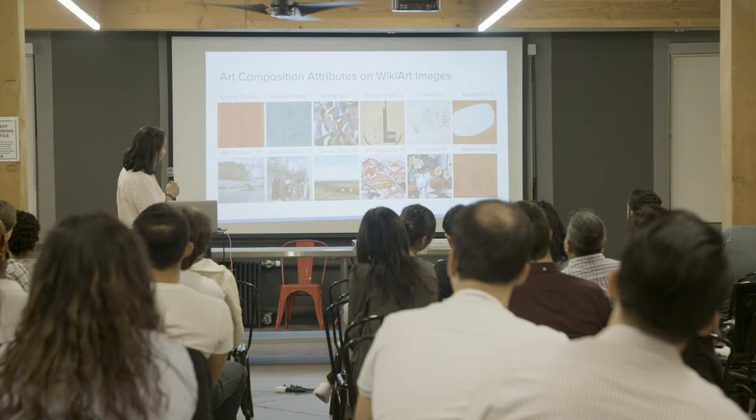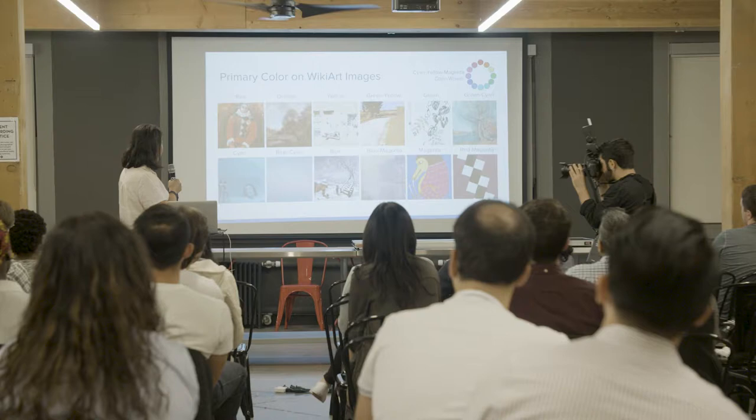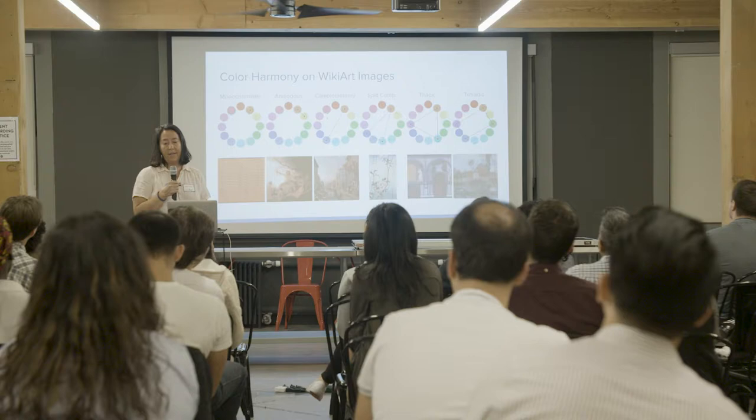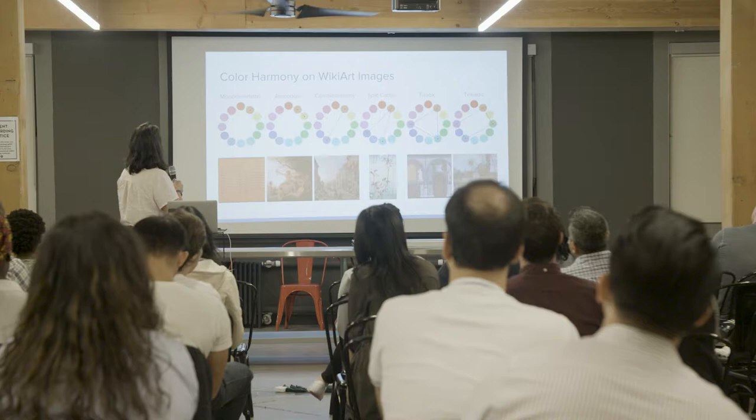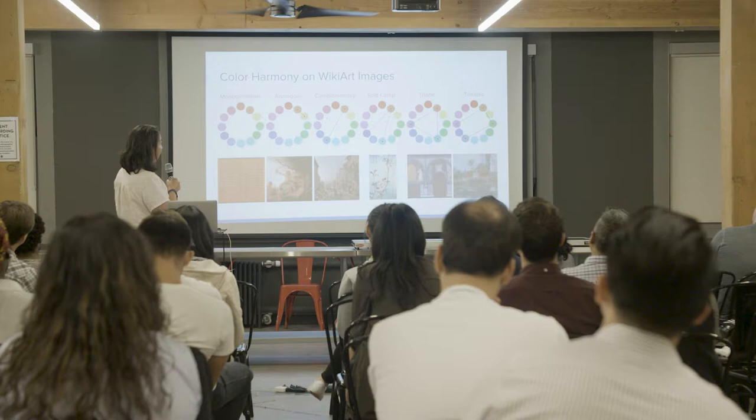For primary color, I used the cyan, yellow, magenta color wheel. Here are examples for each color in the wheel, and here are six images with orange primary color showing color harmony relationships. For instance, the orange is the primary color in these paintings, but they have various other colors that are also part of the paintings based on these different color relationships.